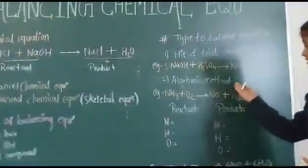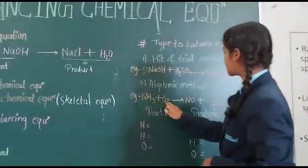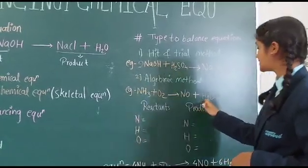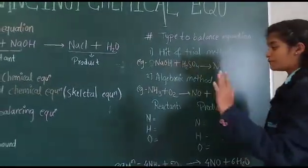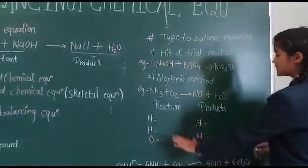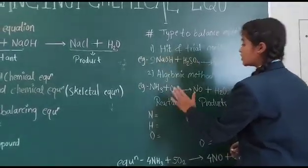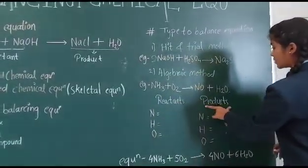So let's see second method which is algebraic method. For example, NH3 plus O2 gives rise to NO plus H2O. So first step, make a box. So the second step, make a list of the elements. So I make a list which is nitrogen, hydrogen and oxygen. So on the reactant side and the product side.